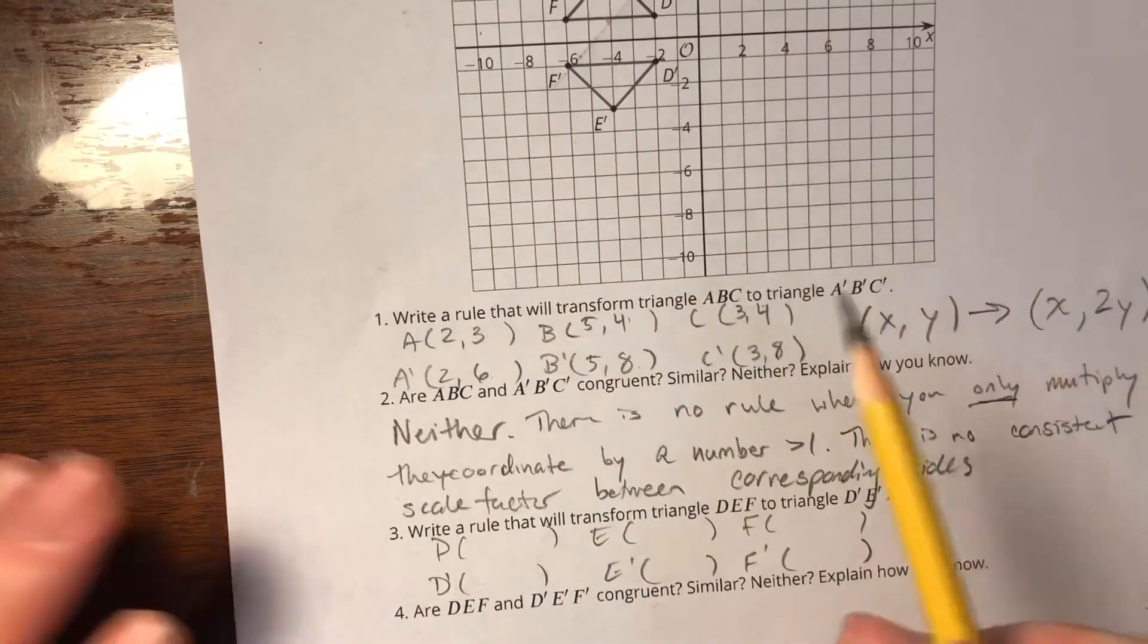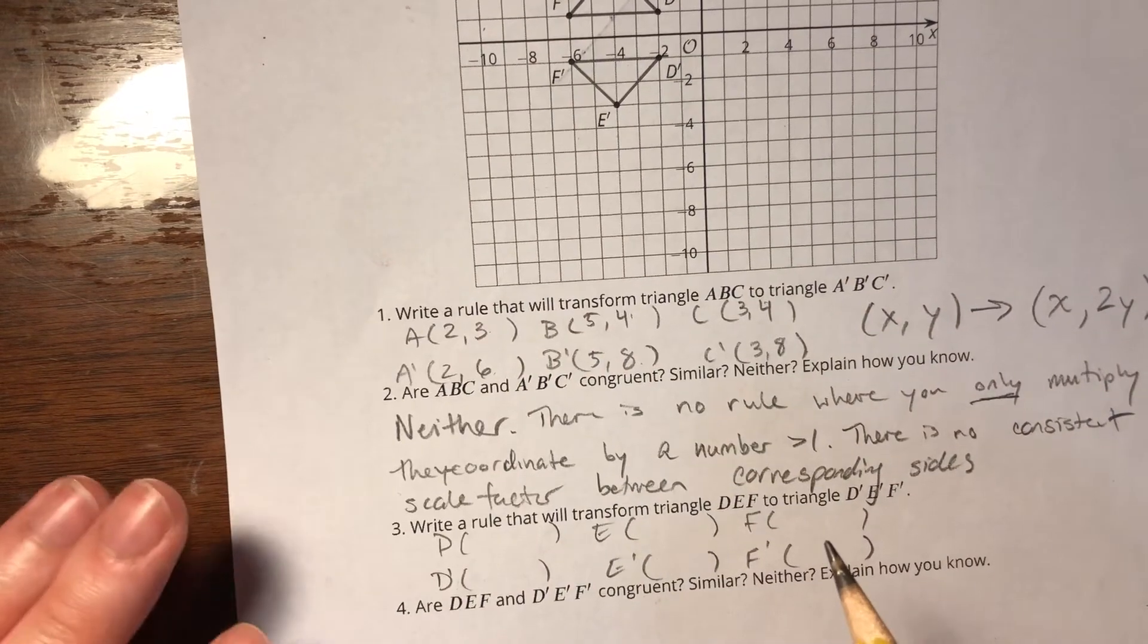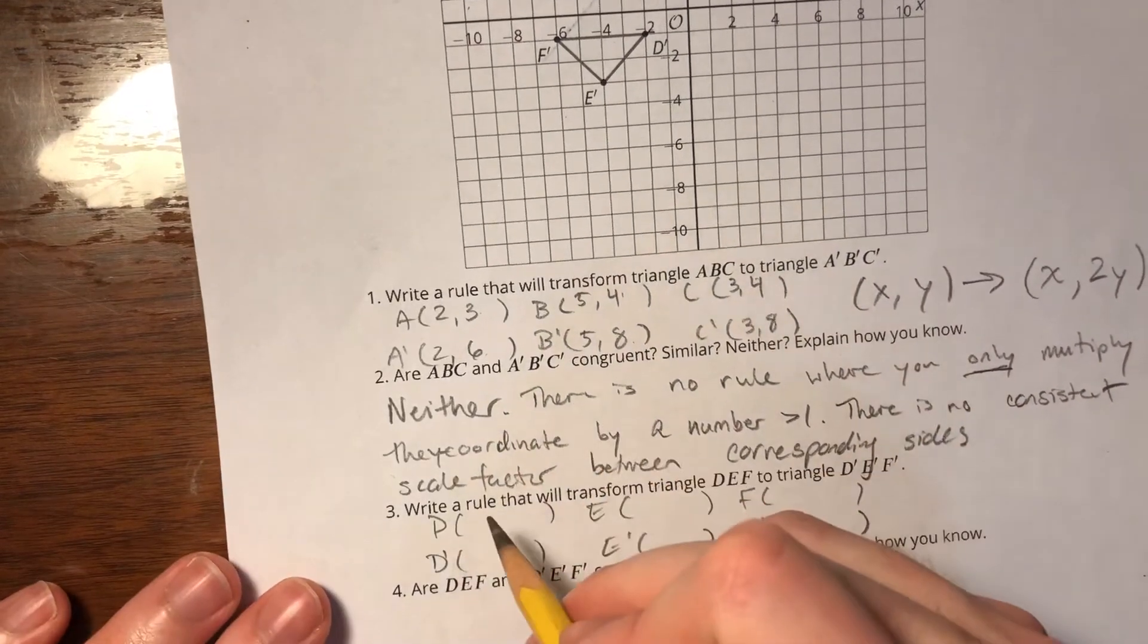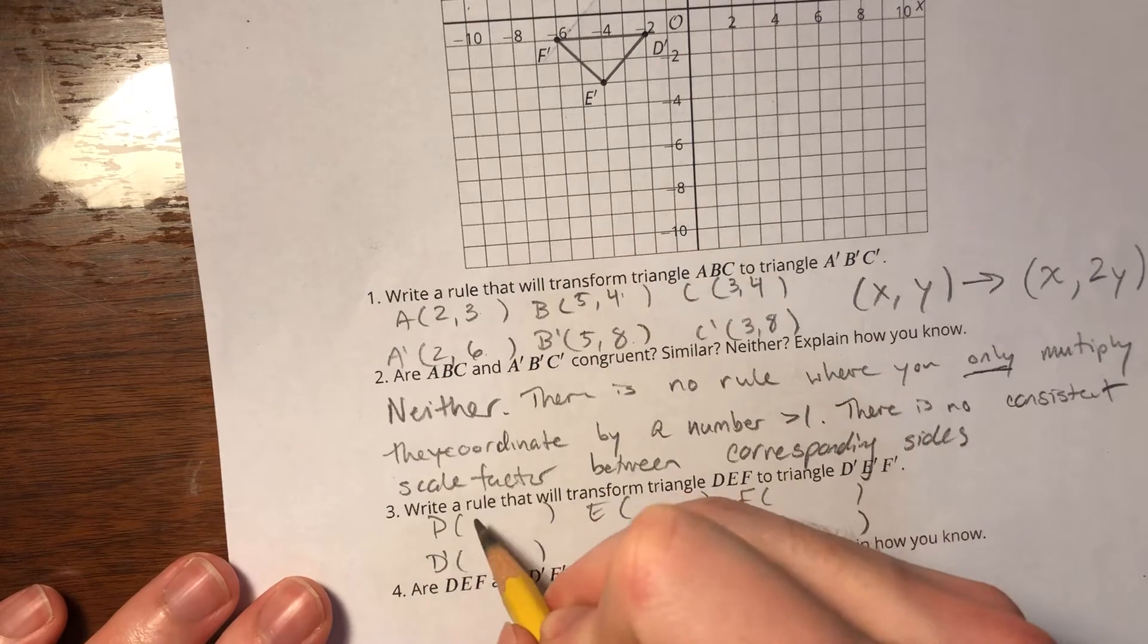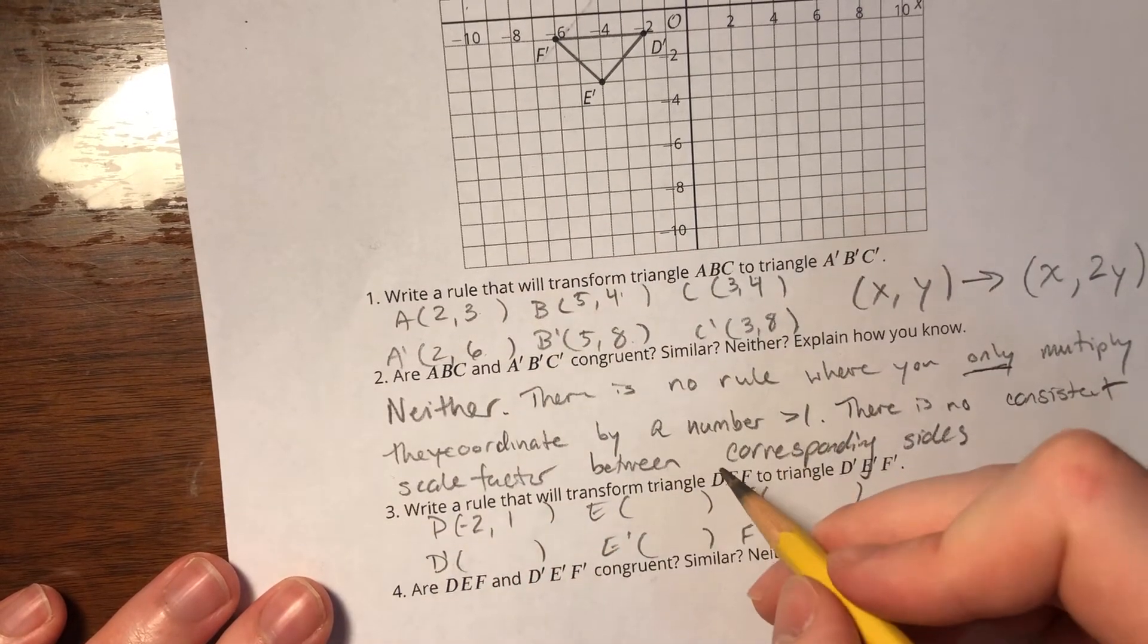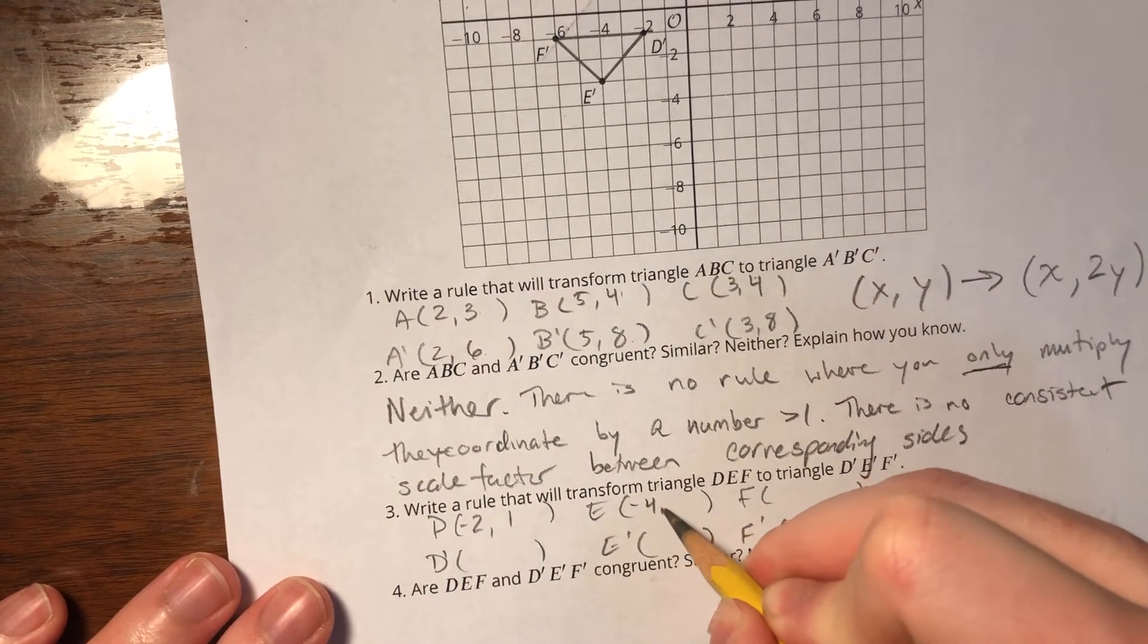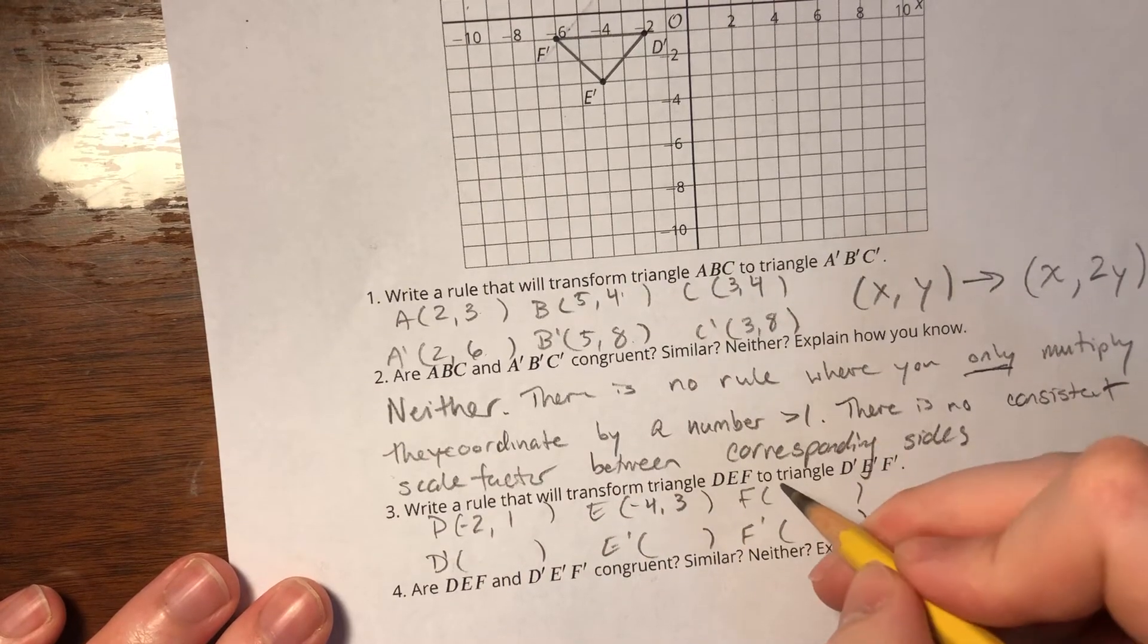Alright. So I can already see the x coordinates stay the same. So that's a good indicator that we're reflecting over the x-axis. So D is at (-2,1), E is at (-4,3), F is at (-6,1).